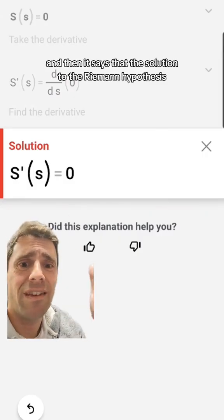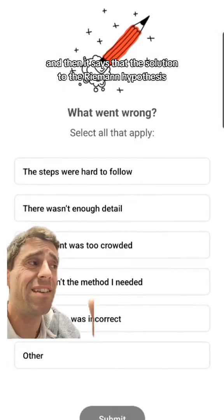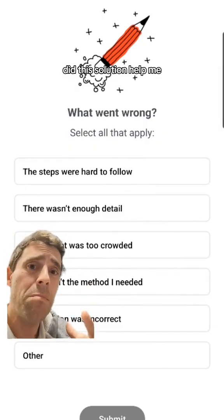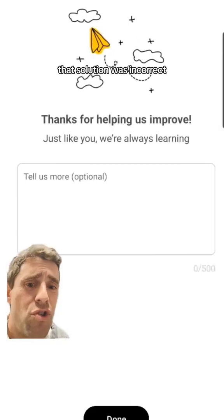And then it says that the solution to the Riemann hypothesis is that the derivative of the Riemann zeta function is zero. Did this solution help me? No, PhotoMath. That solution was incorrect.